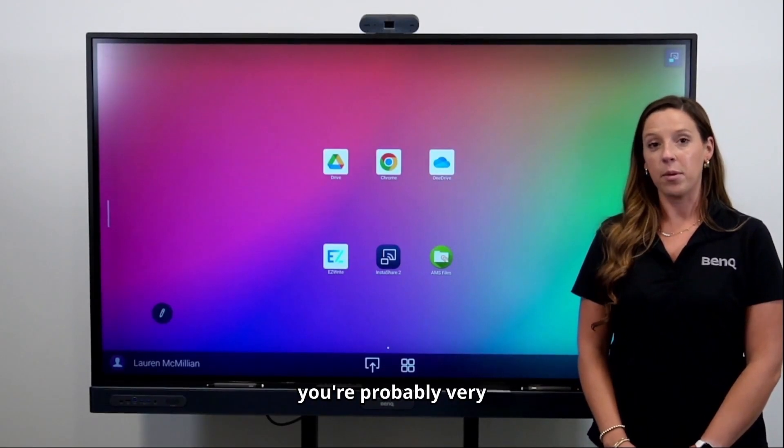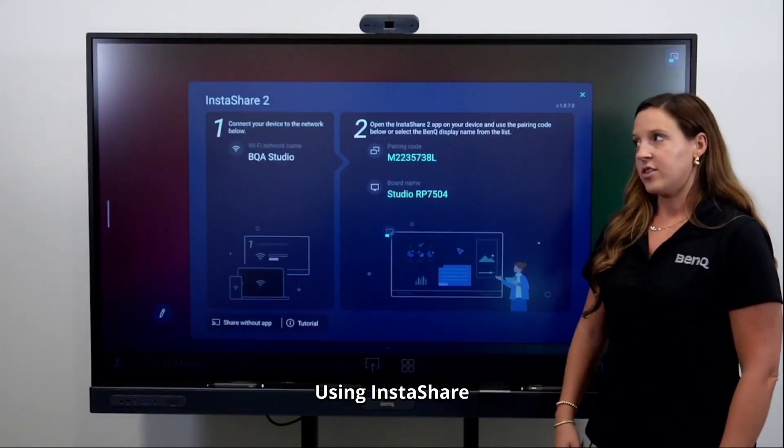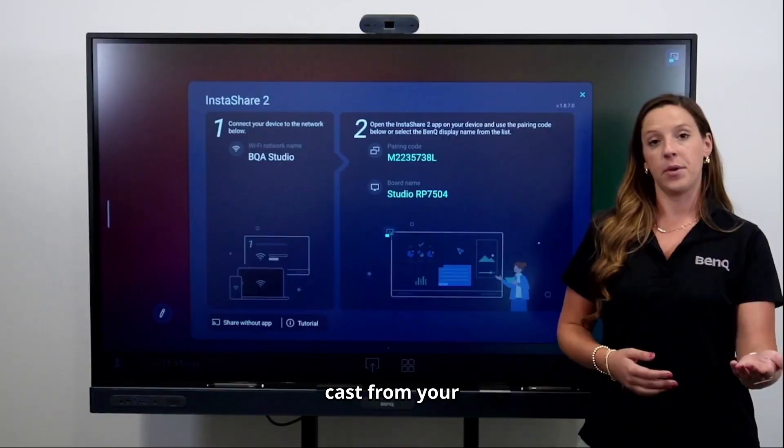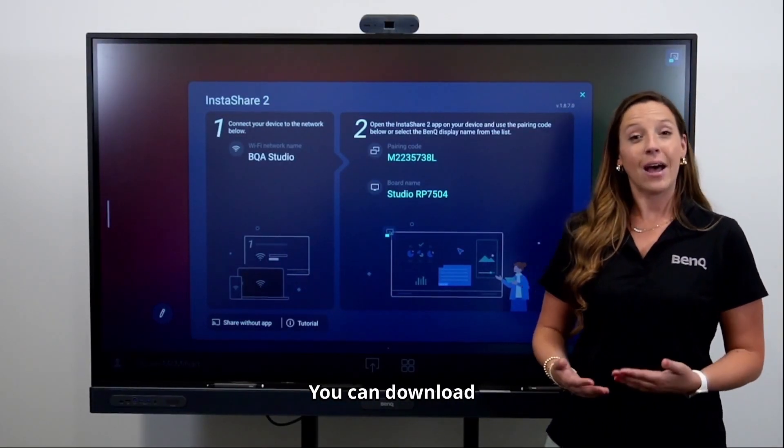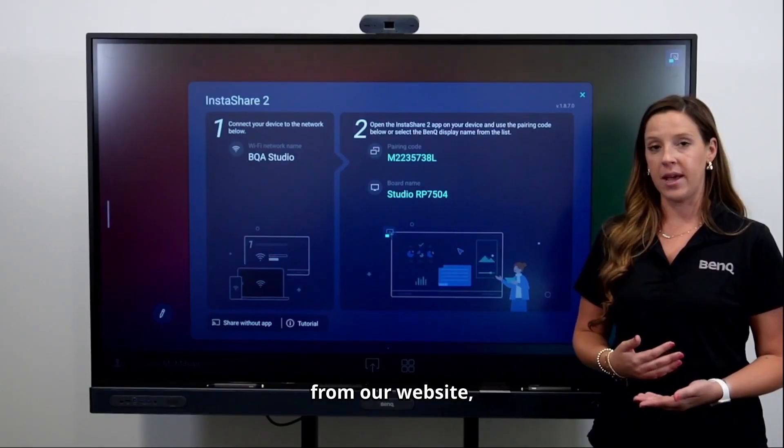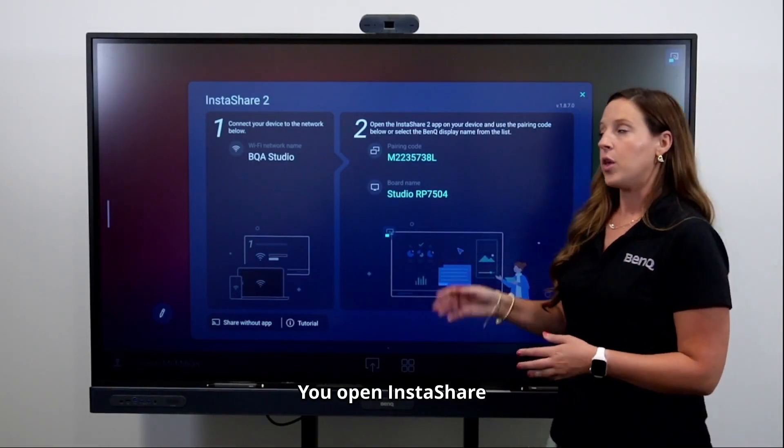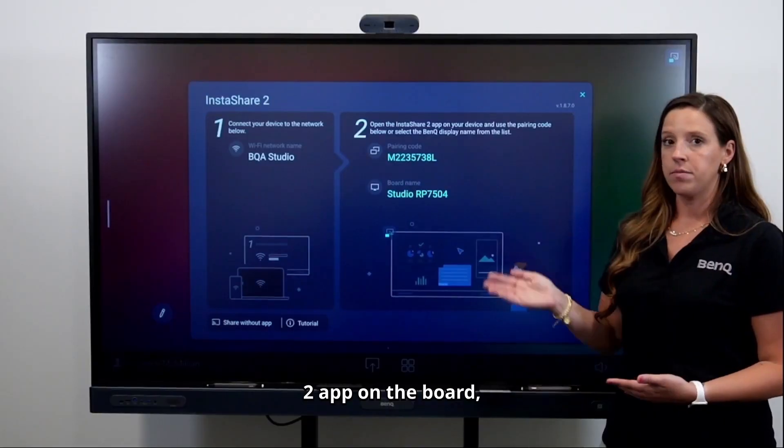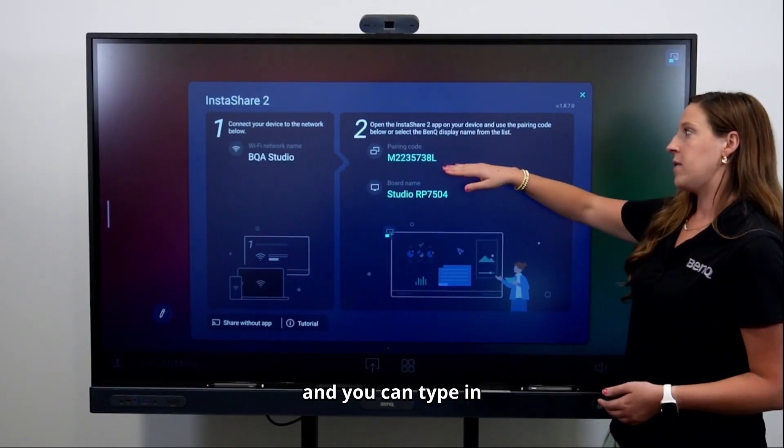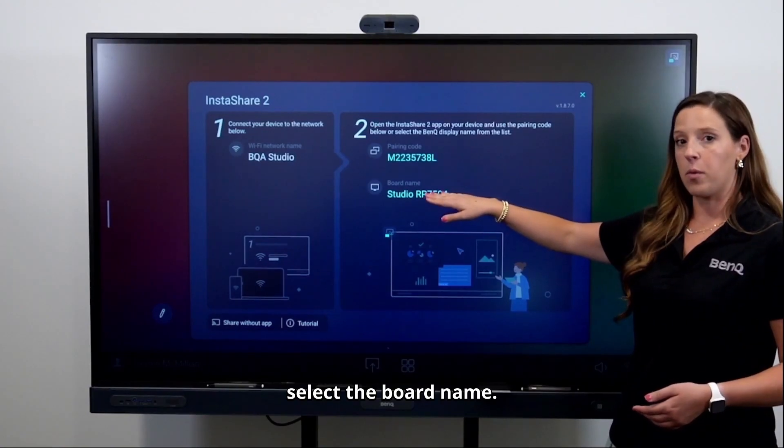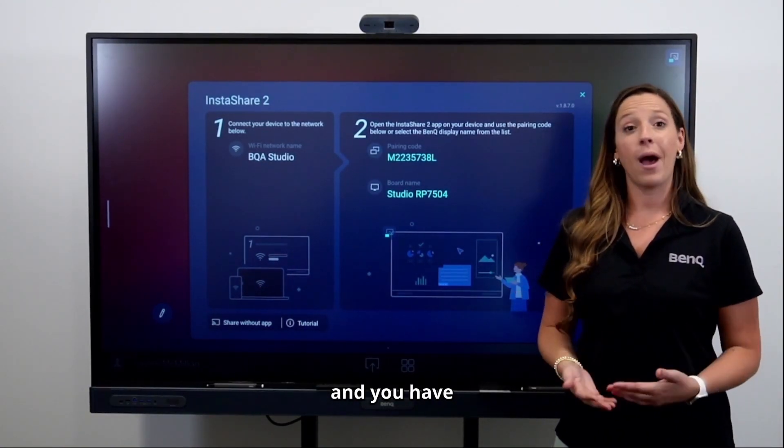Another resource you're probably very familiar with is the casting tool. Using InstaShare 2 allows you to cast from your computer to the board using the InstaShare 2 app. You can download that software directly from our website, but the app also lives in the Play Store and the App Store. You open InstaShare 2 app on the board and on your computer, type in the parent code or select the board name. You can now mirror everything on your computer to the board and you have full touchback.